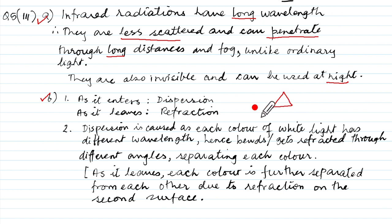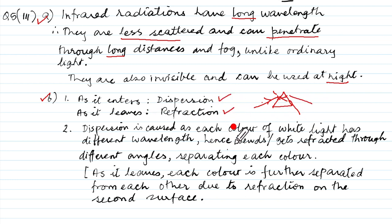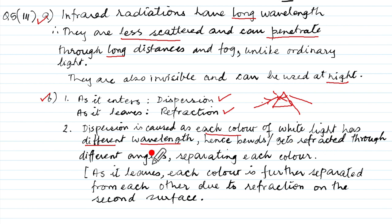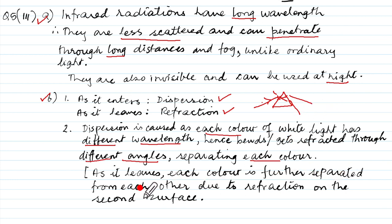Part B: A ray of light is incident at 45° on an equilateral prism. At the first surface, the ray undergoes dispersion (splitting into component colors — red at top, violet at bottom). At the second surface, it undergoes refraction. The cause: each color of white light has a different wavelength, so each bends or refracts through a different angle, separating the colors — this is dispersion.